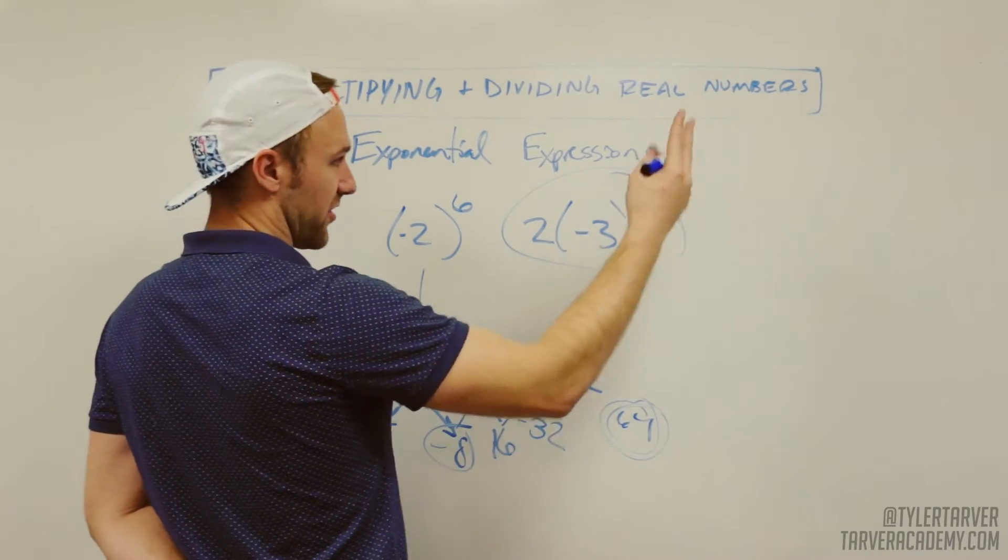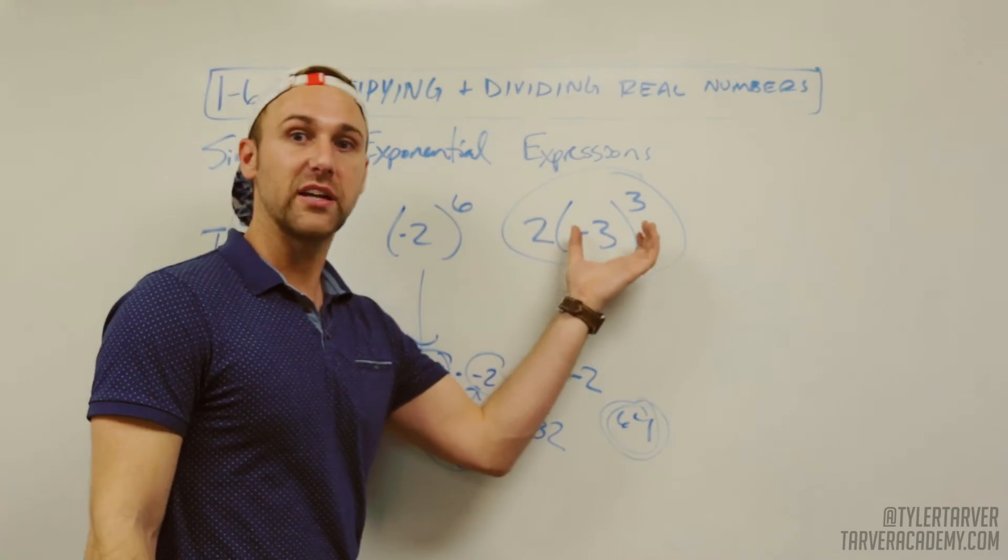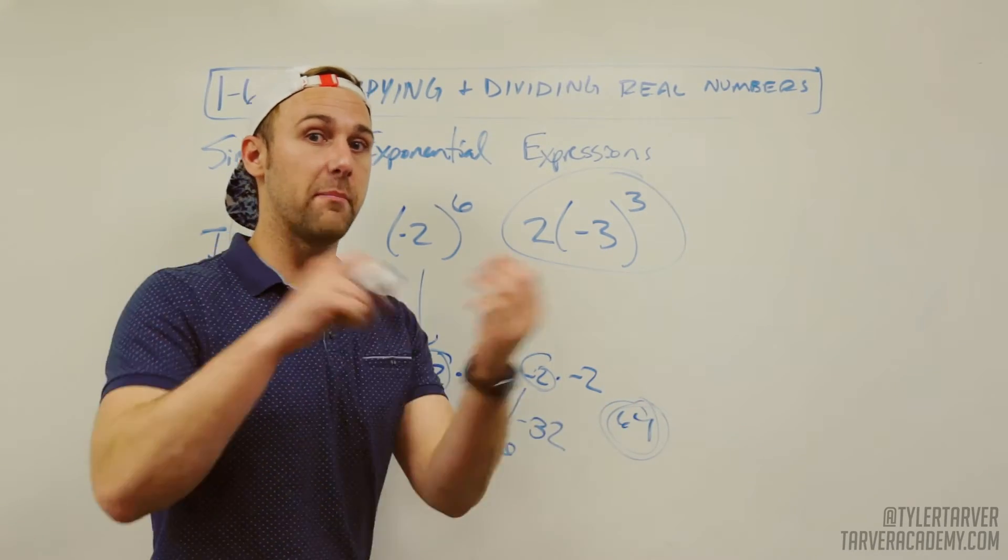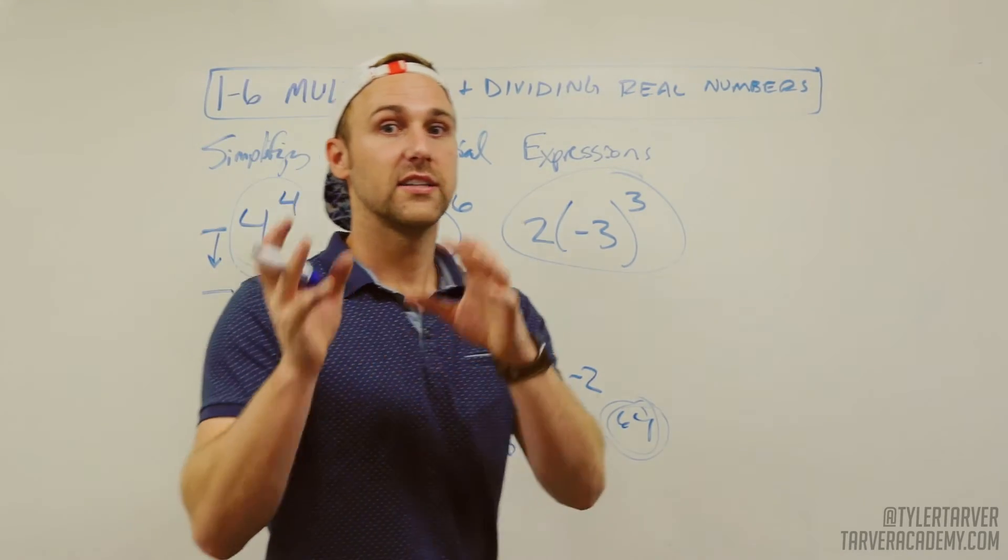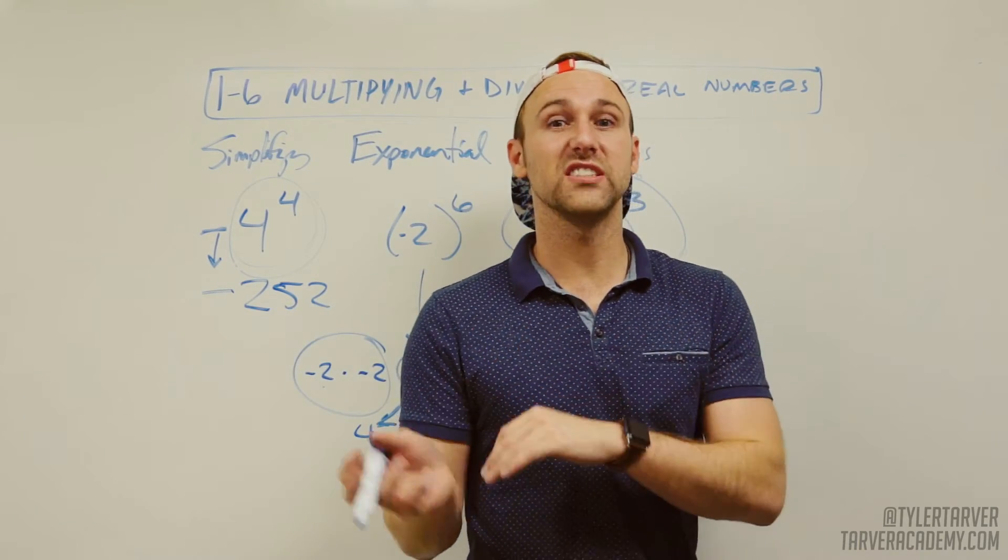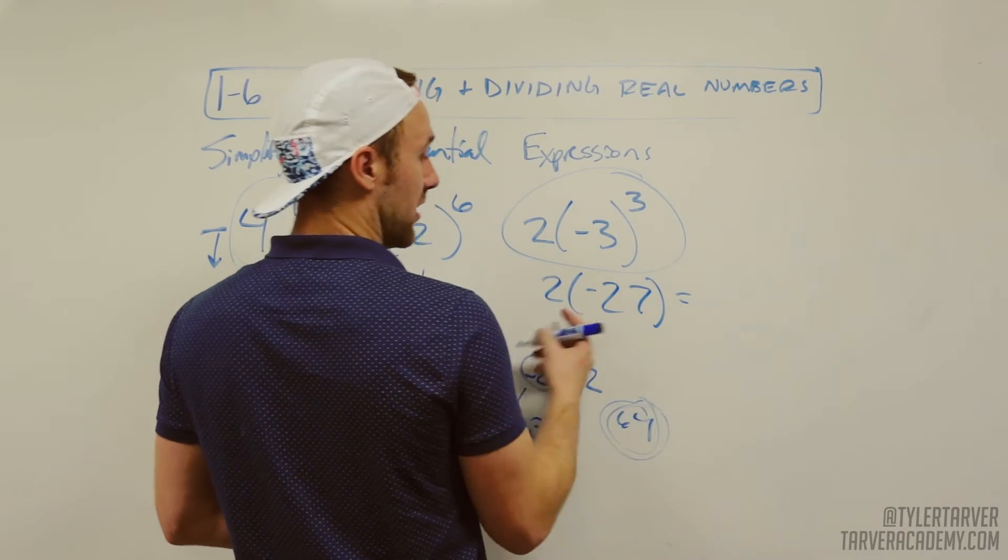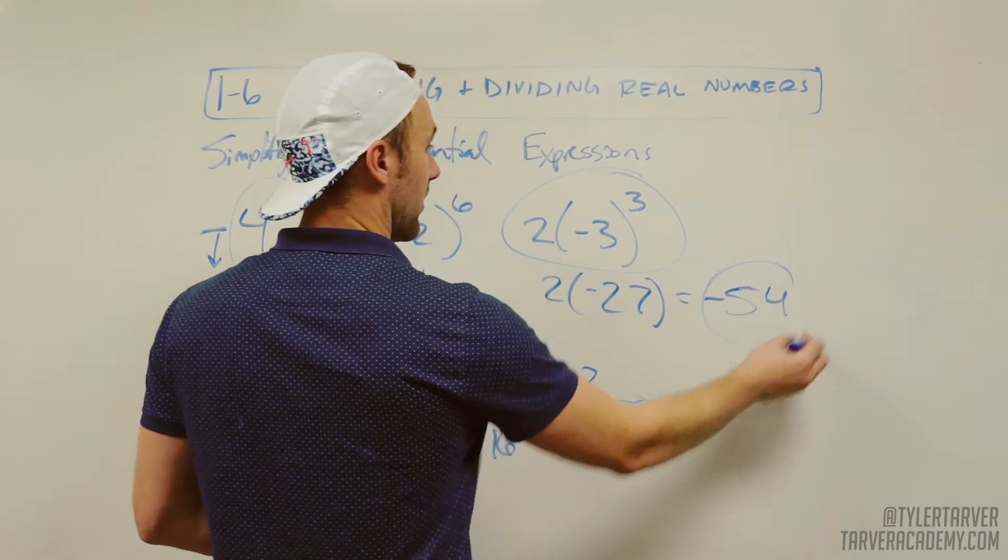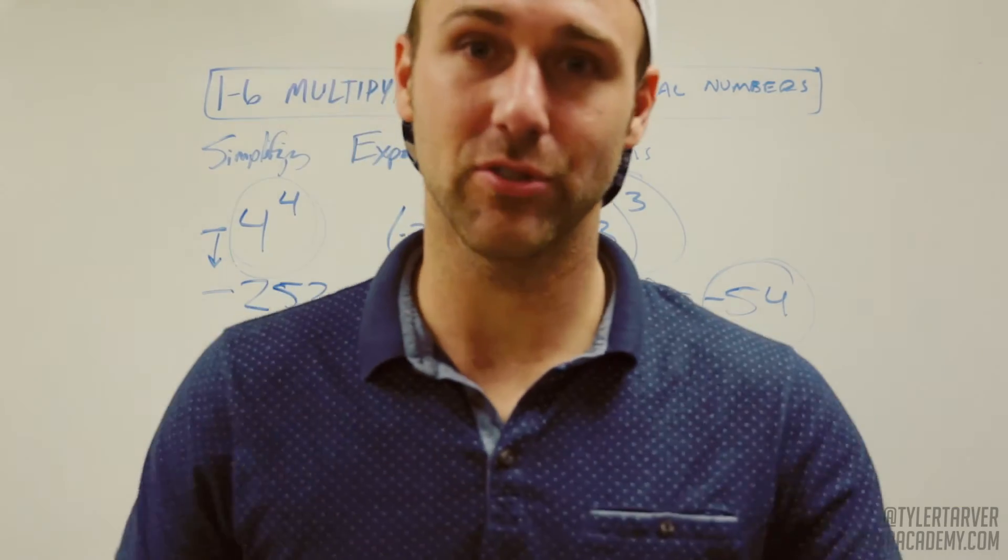Two times negative three to the third or cubed. Again, it does not count that two. It will count the negative because it's in there. Since that's an odd number, you're going to end up with a negative number because it's going to flip back and forth, back and forth, and it's going to stay a negative. So negative three times negative three is positive nine times another negative three, which is negative 27. So two times negative 27 equals another negative, because you know, positive times a negative is a negative. It's 54. That's your answer. You just learned it. That's what's up. Thank you all for joining me. Peace.